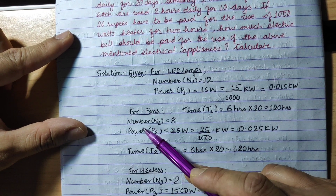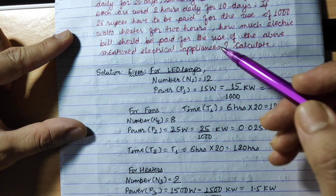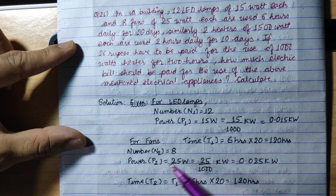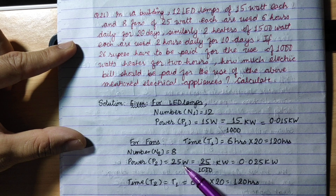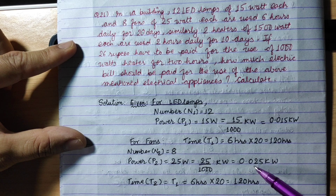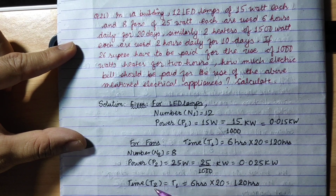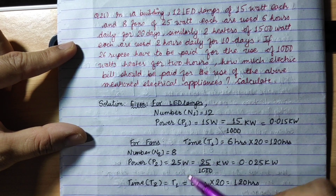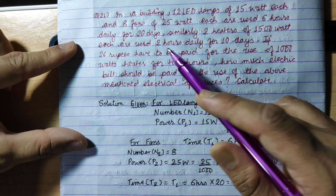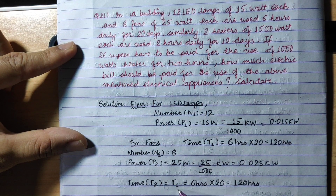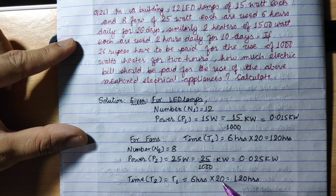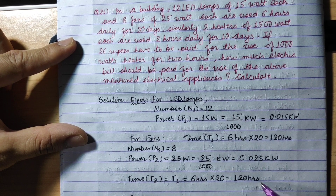For fans: n2 = 8. Power P2 = 25 watts = 0.025 kW (dividing by 1000). Time t2 is also the same as t1 — used 6 hours × 20 days = 120 hours.